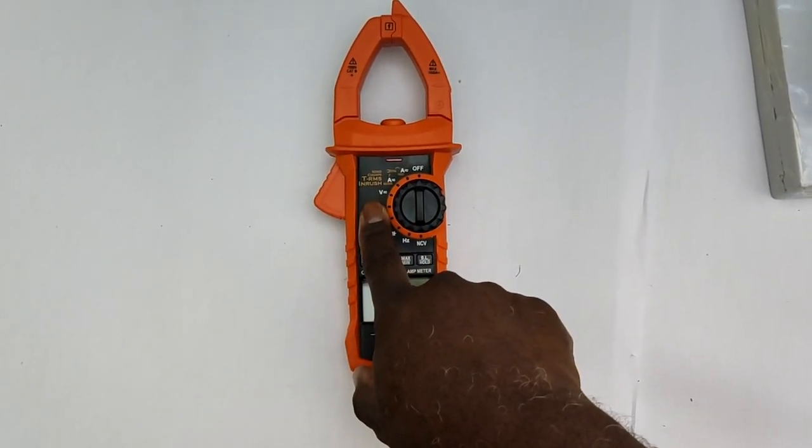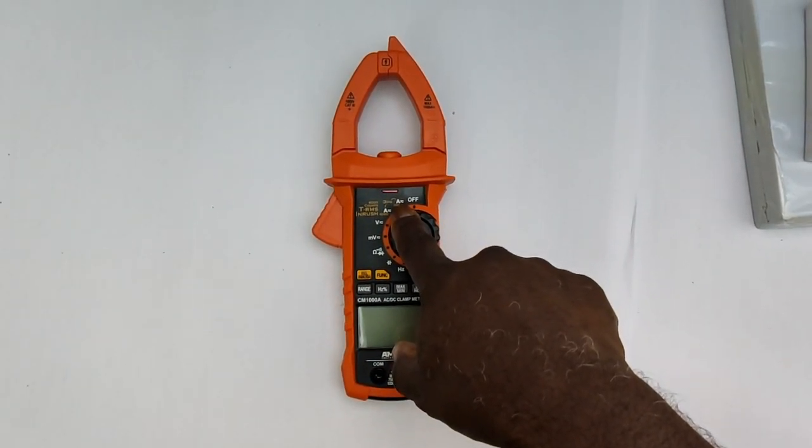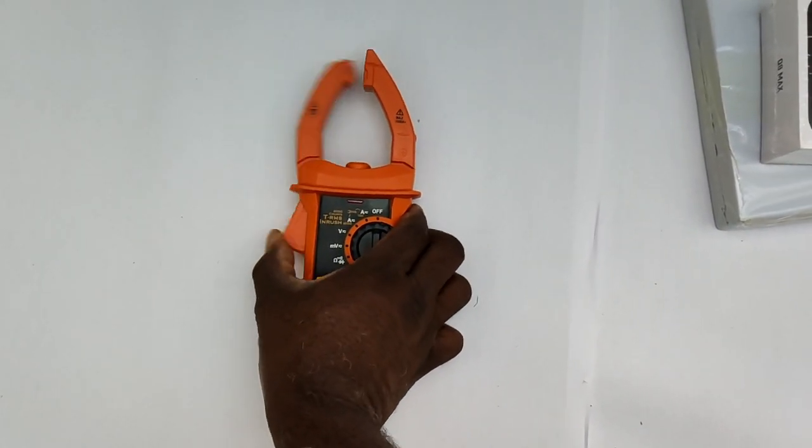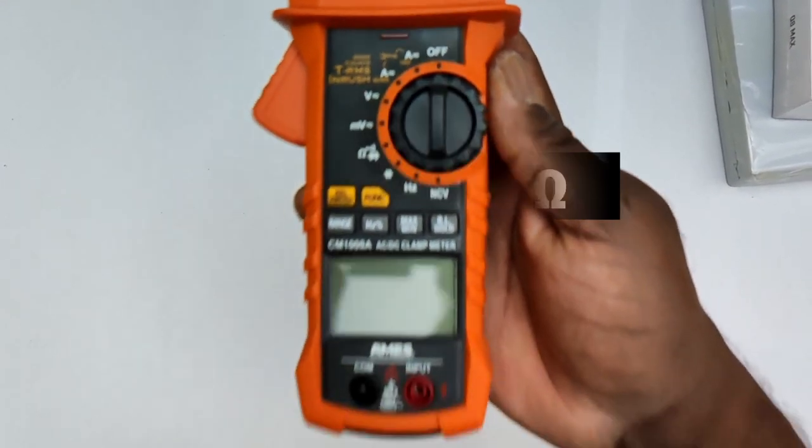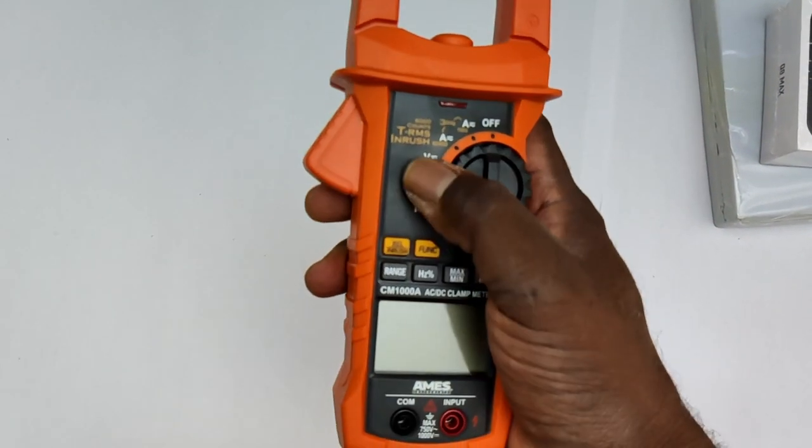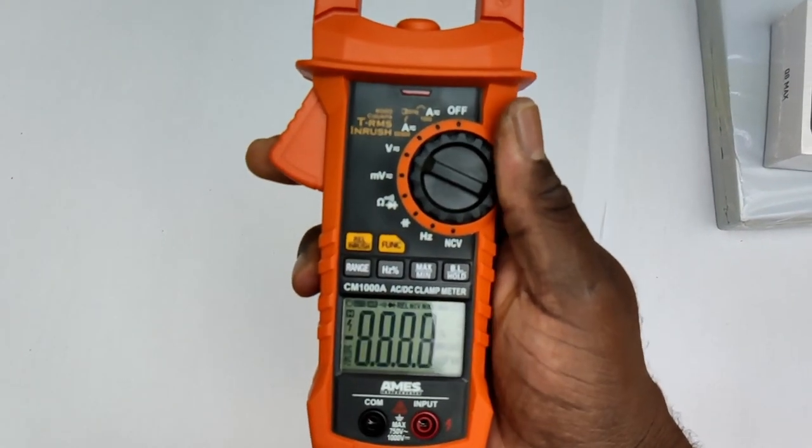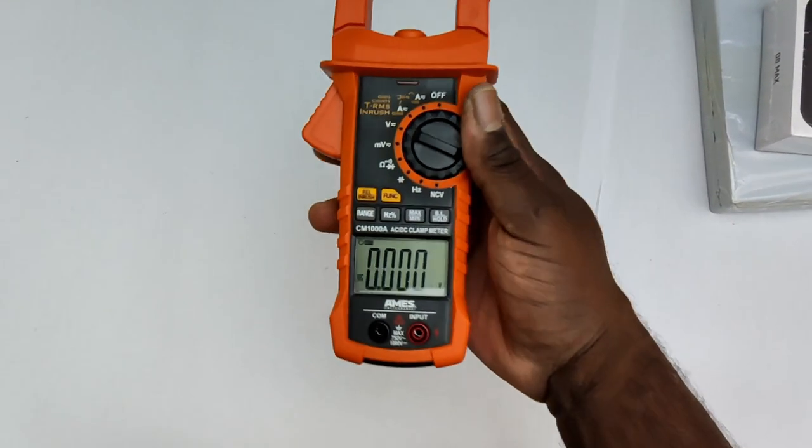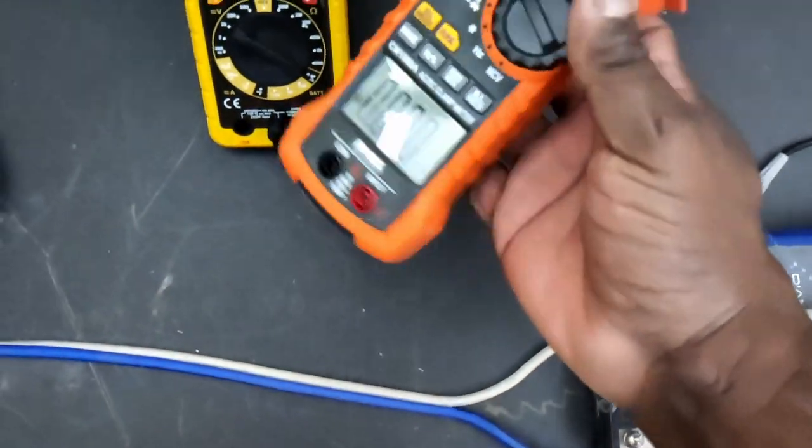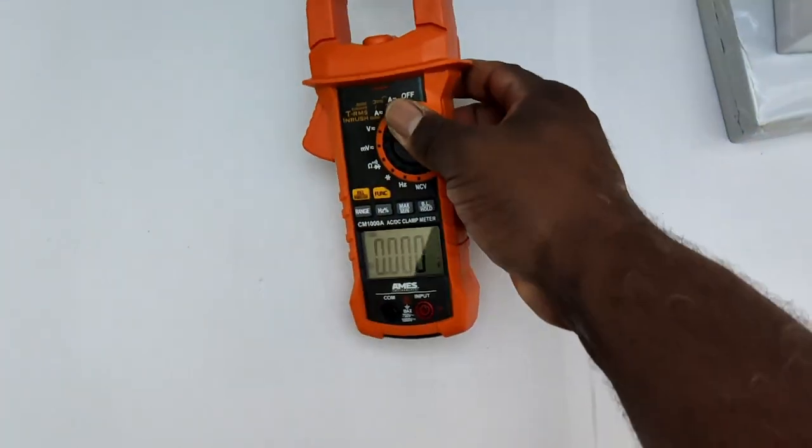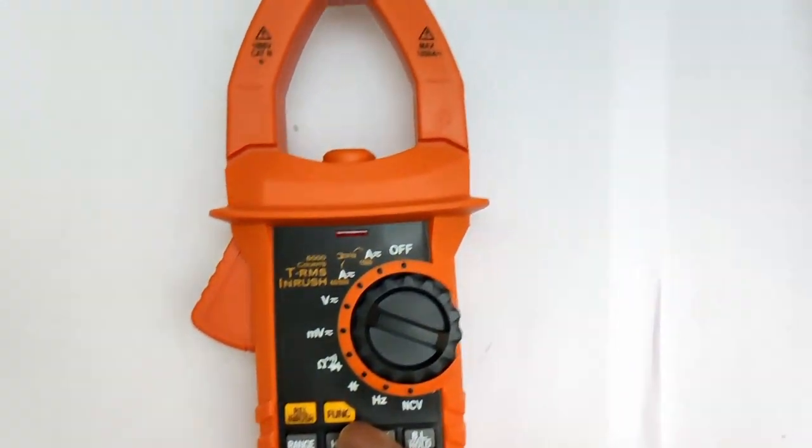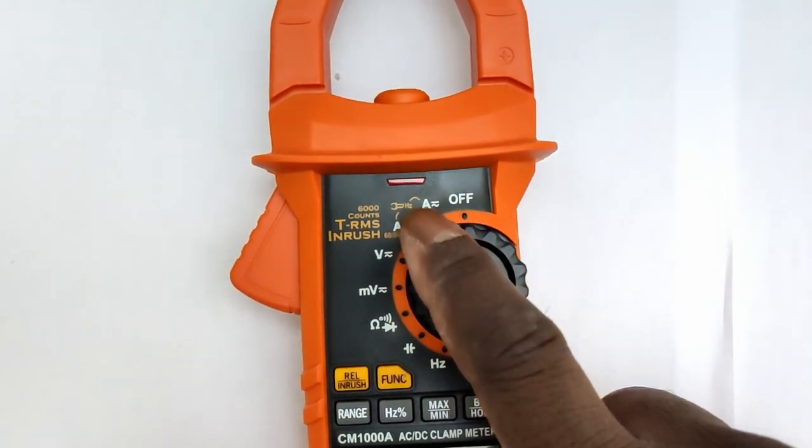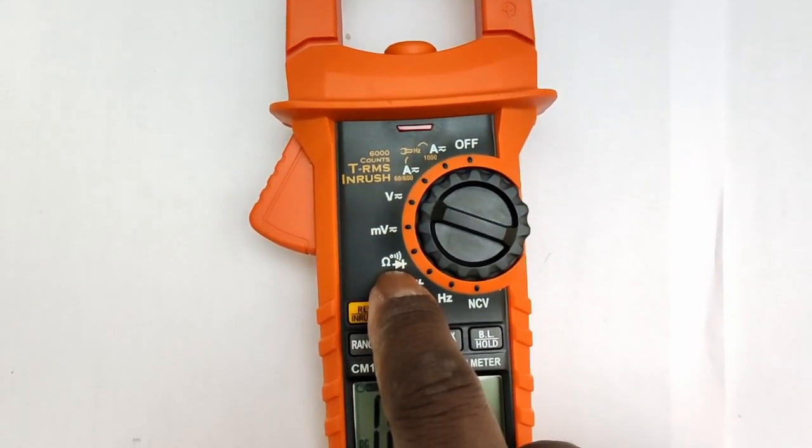Now this thing does a whole lot. It does amperage, DC and AC amperage because it's a clamp meter. You push that and it opens up. So it does AC and DC. It does voltage, so you can measure voltage. So it can be a voltmeter. It actually comes with leads as well, but I'm not going to connect them right now.